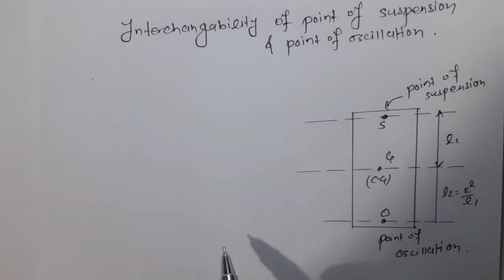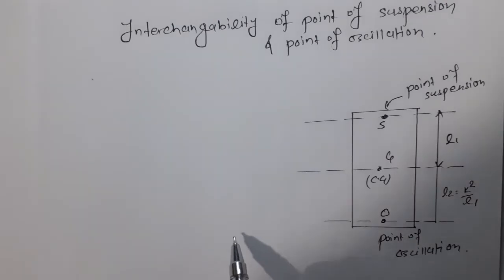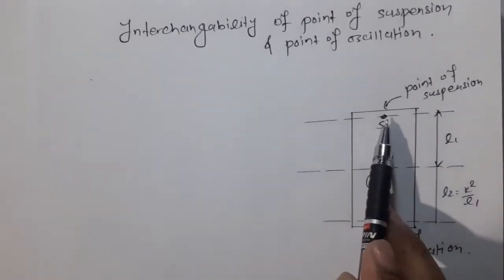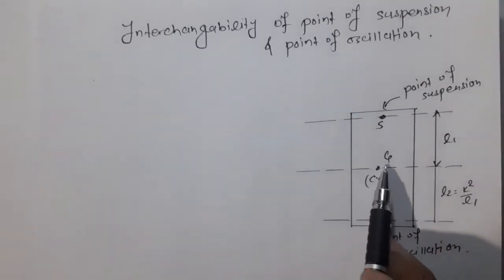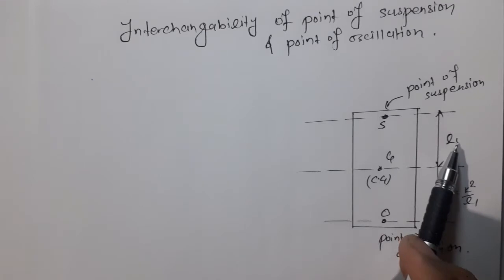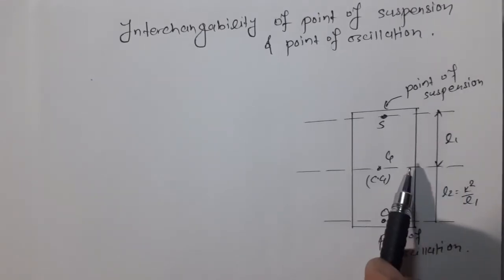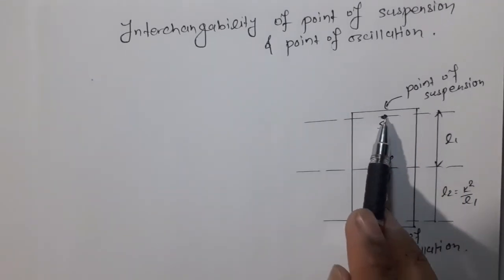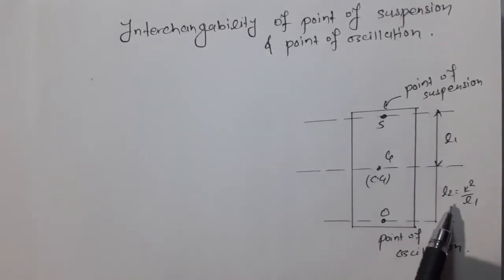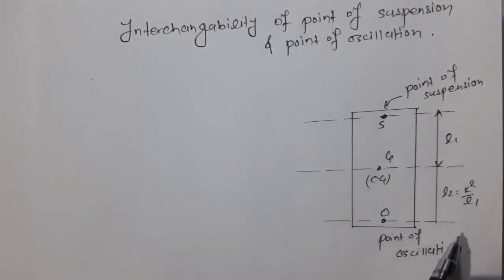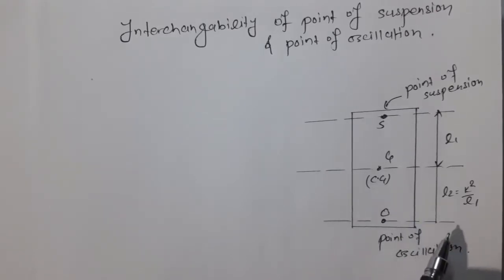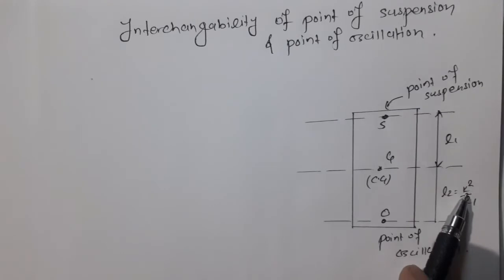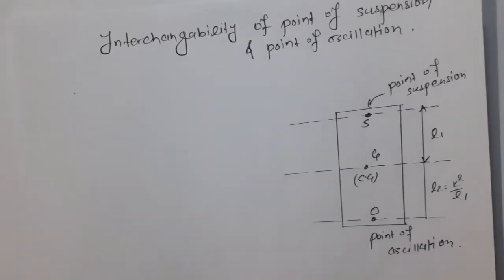We are going to talk about interchangeability of point of suspension and point of oscillation. In this figure, S is the point of suspension, O is the point of oscillation, and G is the center of gravity. L1 is the distance between the center of gravity and point of suspension, and L2 is equal to K squared by L1, where K is the radius of gyration.